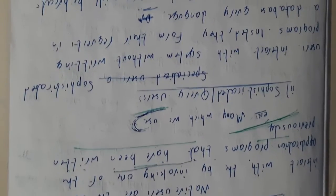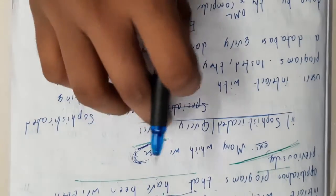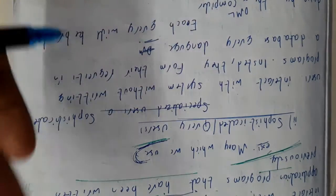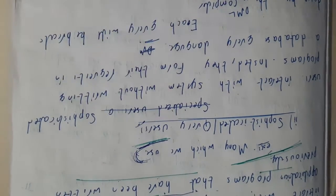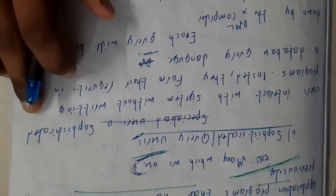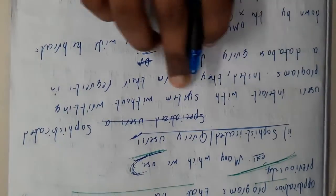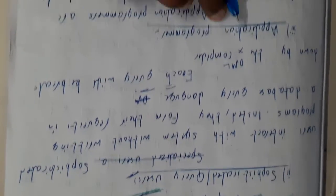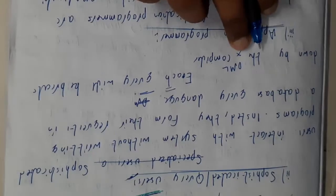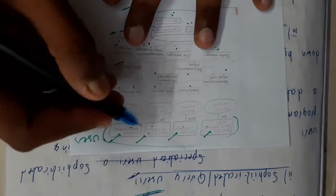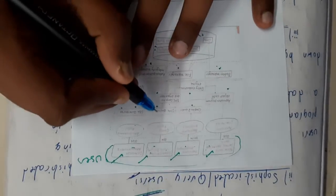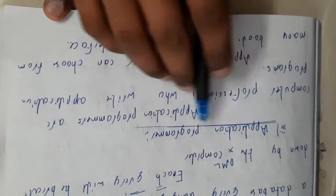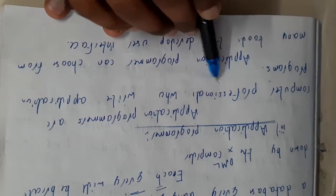Now let us go through sophisticated users or query users. These are the type of programmers which we are now — we'll be using queries to retrieve data. Sophisticated users interact with the system without writing programs; instead, they form their requests in the database using query languages. Each query will be broken down by the DML compiler, so in the diagram the sophisticated users will be directly connected to the DML compiler.